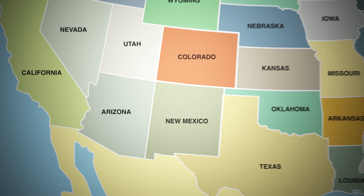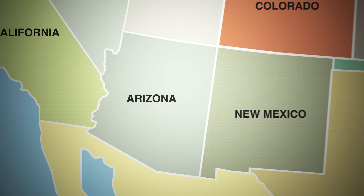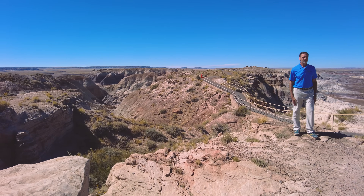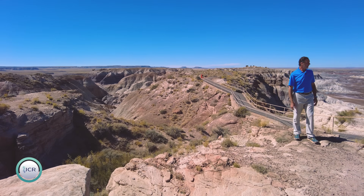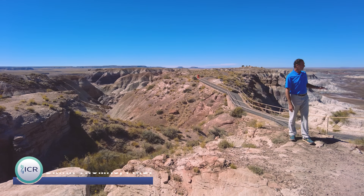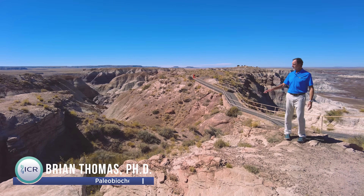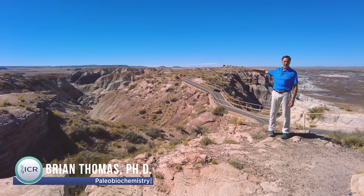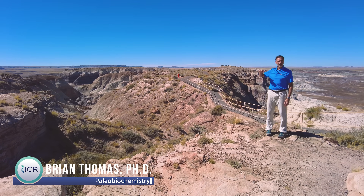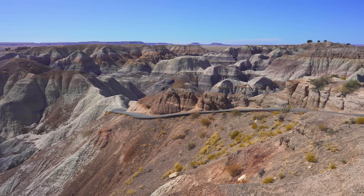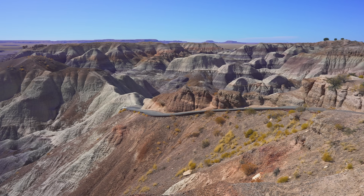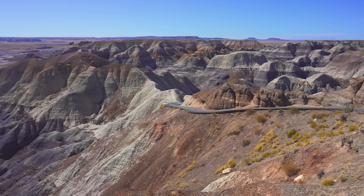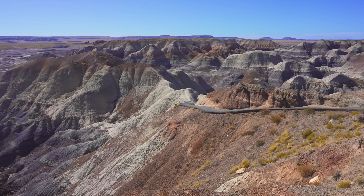Here we are at Painted Desert. Painted why? The different colors of rock layers. And we could see in the distance these layers extend for many, many miles — nice and flat. They've been carved, and the remnants of what was once nice and flat are what we see today.